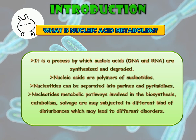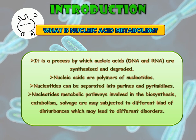These nucleotides can be separated into Purines and Pyrimidines components. Purines consist of adenine and guanine, while Pyrimidines consist of cytosine, thymine, and also uracil. These nucleotides' metabolic pathways — involving biosynthesis, catabolism, and salvage — may be subjected to different kinds of disturbances, which may lead to different disorders such as Lesch-Nyhan syndrome, hyperuricemia, gout, and also purine nucleoside deficiency.